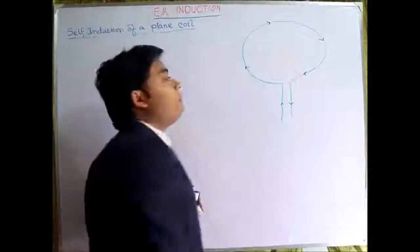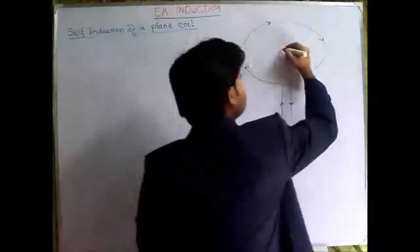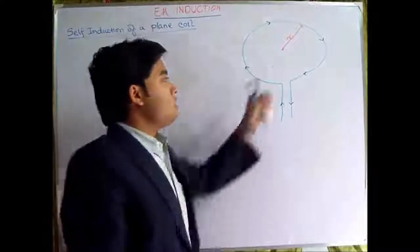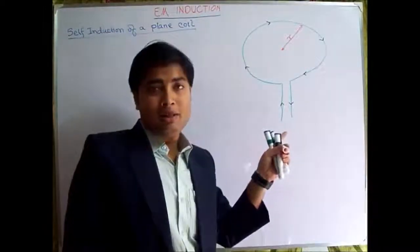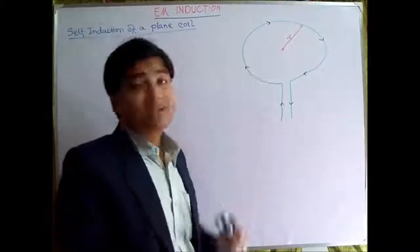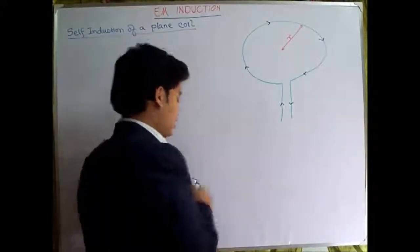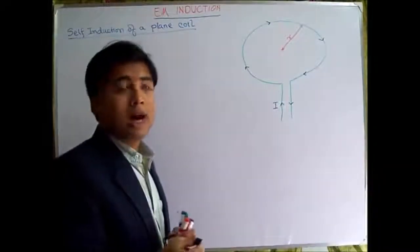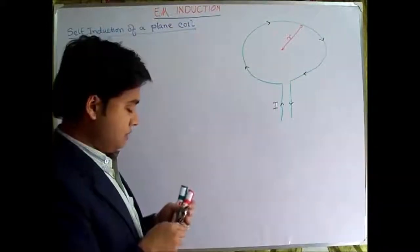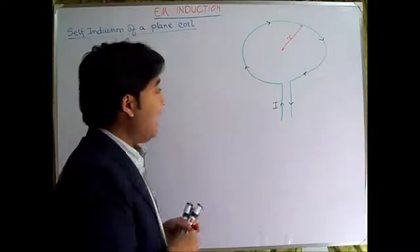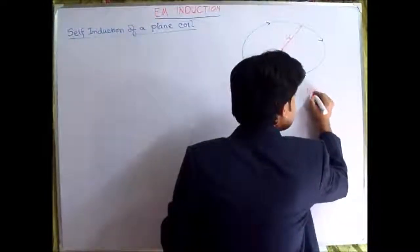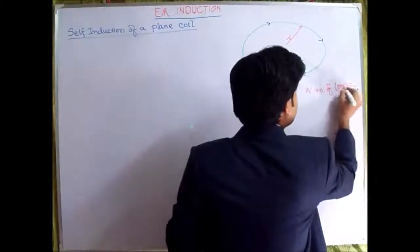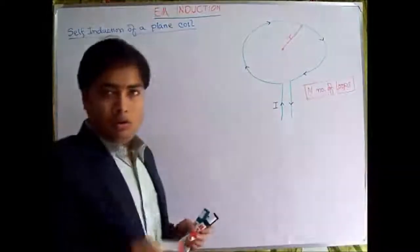Say this is the middle point and this is the radius. Say for example this is a circle of radius R. The current that is flowing, say for example this is I, and it has got N number of loops.